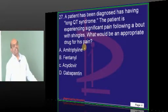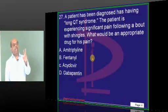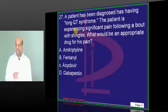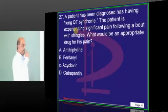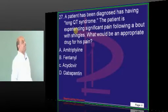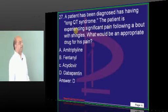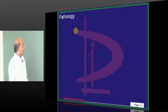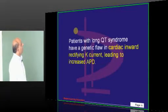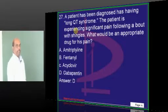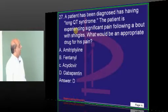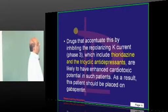A patient with long QT syndrome has shingles. Out of the drug options, tricyclics and gabapentin can treat shingles pain. However, due to long QT syndrome, tricyclics are avoided, so gabapentin is preferred. Fentanyl patches may also be available but gabapentin is more effective.